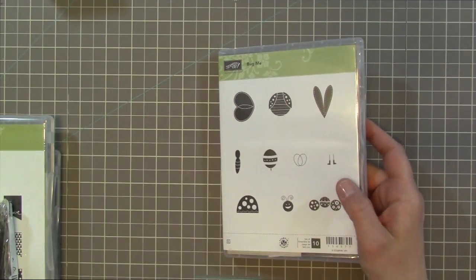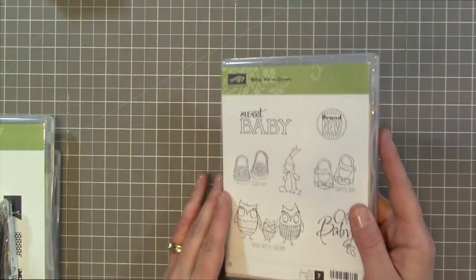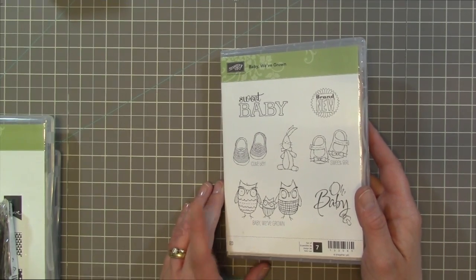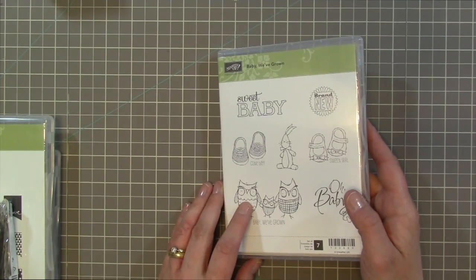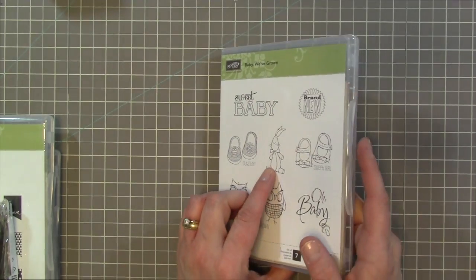I got Bug Me where you can build your own butterflies and ladybugs. So cute. And then Baby We've Grown which is from the Occasions catalog. And I really like the owls and the bunny rabbit I thought would make great for Easter. So I got those.